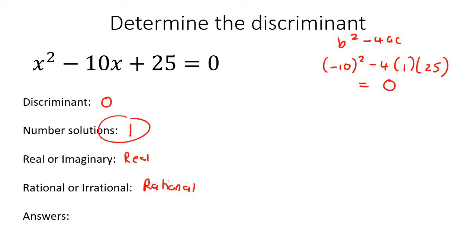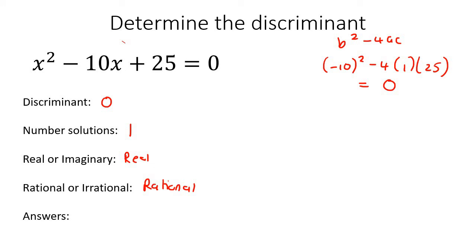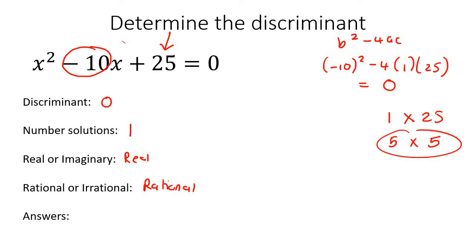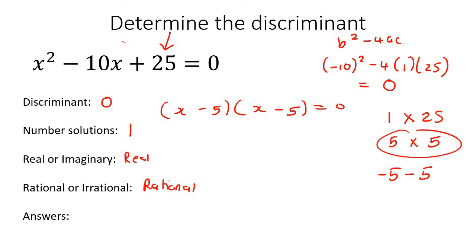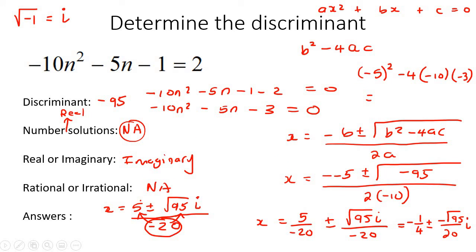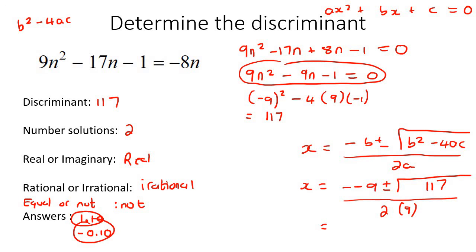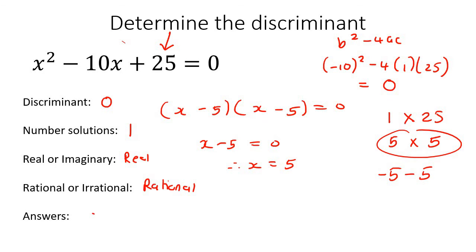Let's go get the actual answers. I'll factorize this one — it factorizes really nicely. Looking at 25, that's 5 times 5, and combining gives minus 5 and minus 5, which adds to minus 10. So we get two identical brackets: x minus 5 times x minus 5 equals 0. Therefore, x equals 5. There is only one answer — whereas in the previous examples, there were two answers.